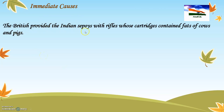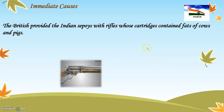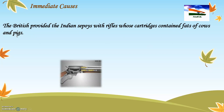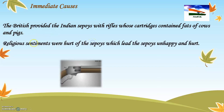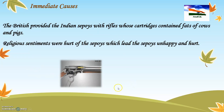Immediate causes: The British provided the Indian sepoys with rifles whose cartridges contained fats of cows and pigs. These guns had cartridges made from cow and pig fat. Since some soldiers belonged to the Hindu religion and some to the Muslim religion, they were not allowed to touch the cow or pig according to their beliefs. But the British forced the Indian soldiers to use such rifles, which was not acceptable to them. This hurt their religious sentiments, making the sepoys unhappy and angry, and inspired them to fight against the Britishers.